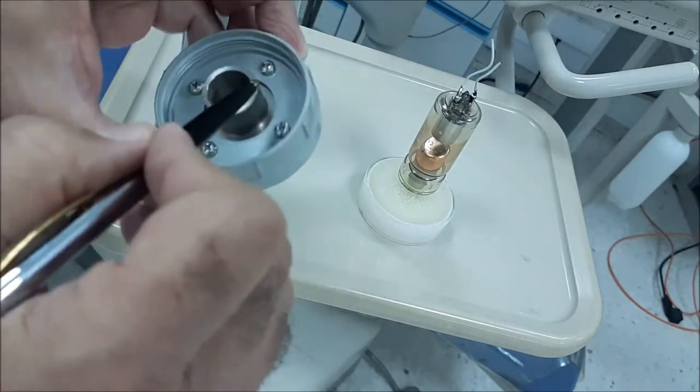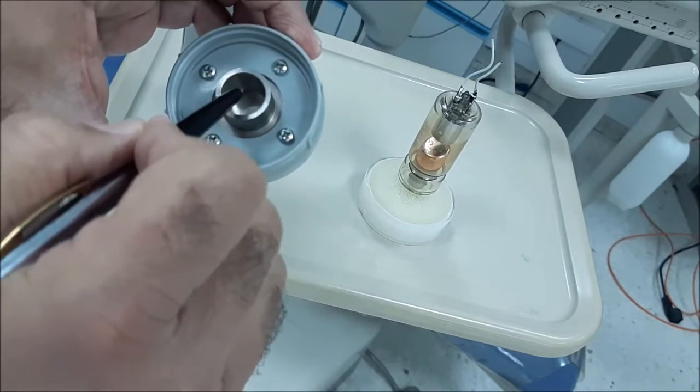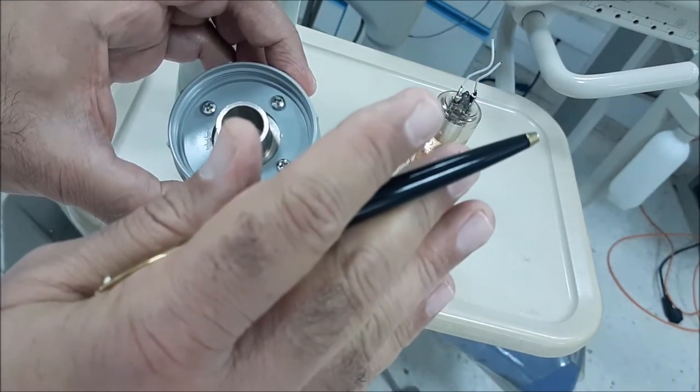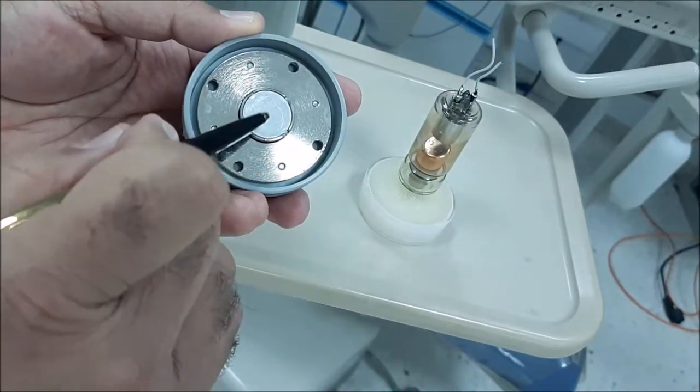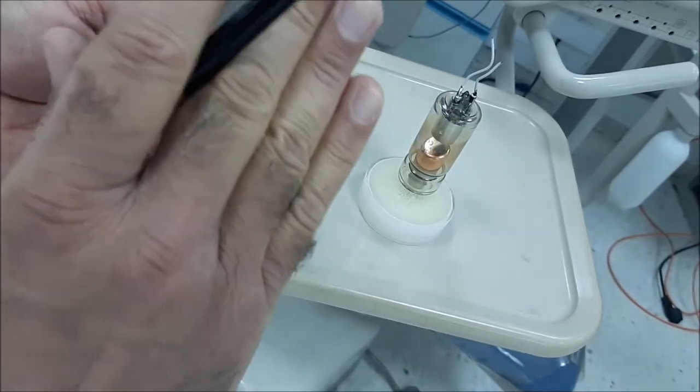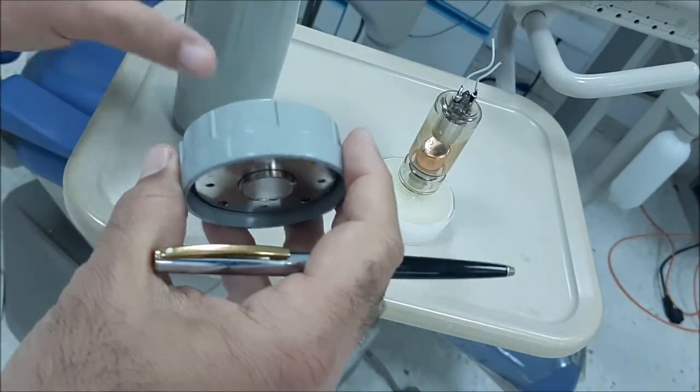It's made of lead because lead has the ability to absorb all types, all energies of x-ray, while the aluminum filter is made of aluminum because it only cuts off the low energy x-ray.